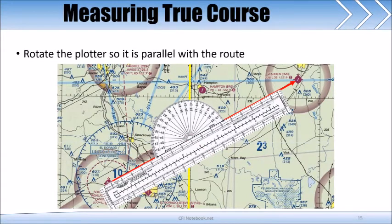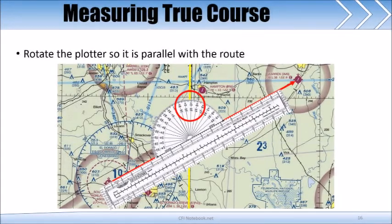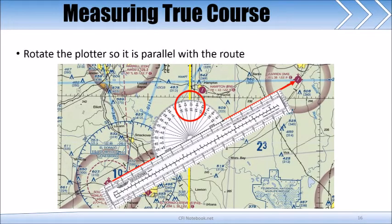With the small hole held over the intersection of the two lines, rotate the plotter so that it is parallel to the course shown. We need to read the heading at the top of the plotter, so let's focus here.